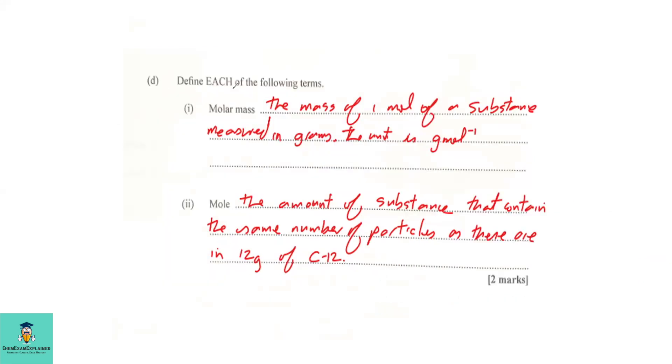Part D. Define each of the following terms. Part 1. Molar mass. Molar mass is a mass of one mole of a substance measured in grams. The unit is grams per mole. Part 2. Define the mole. In this case, the mole is the amount of substance that contain the same number of particles as there are in 12 grams of carbon-12.